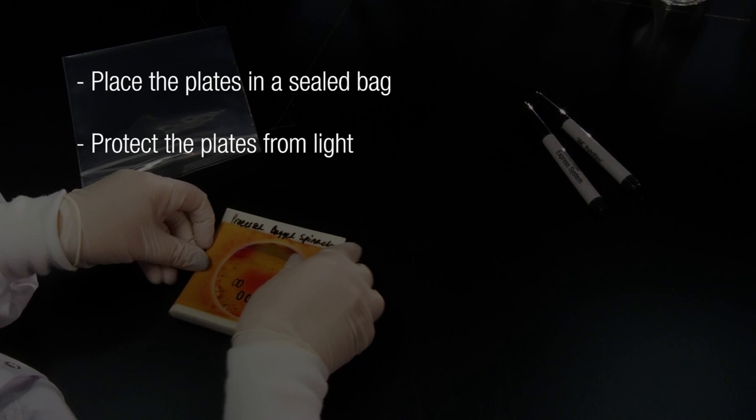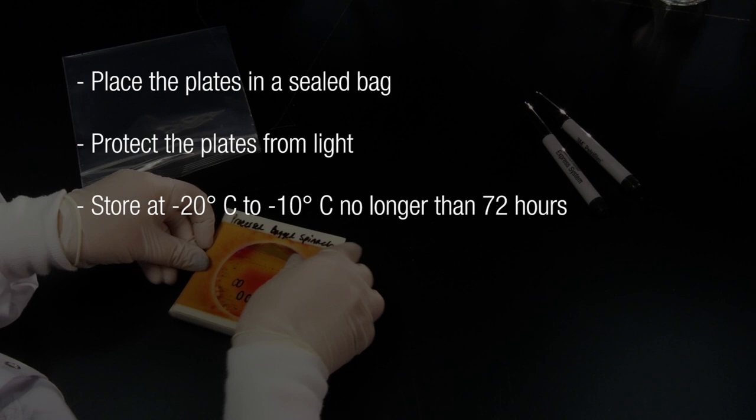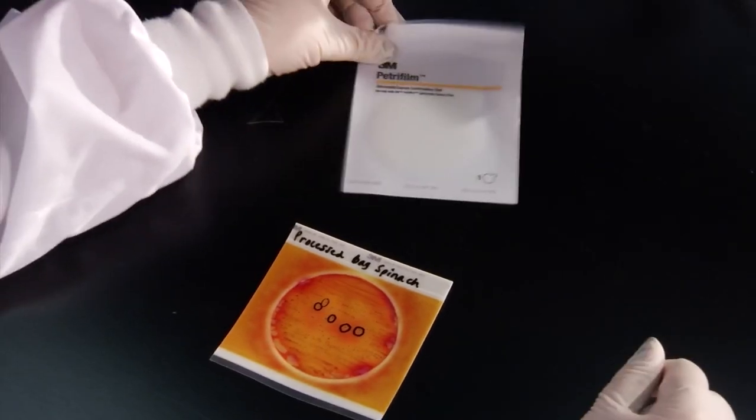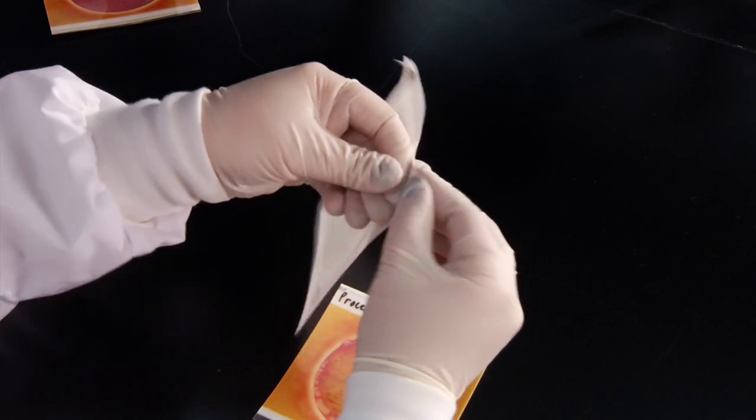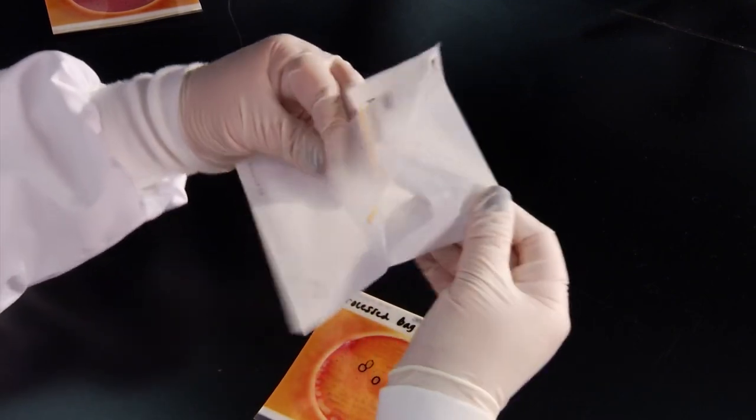Make sure to protect the 3M PetriFilm Salmonella Express plates from light and store the plates at negative 20 to negative 10 degrees Celsius for no longer than 72 hours. Before adding the disc to the plate, allow the plates to warm to 20 to 25 degrees Celsius.